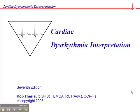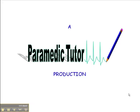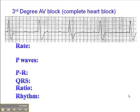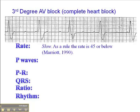We're on page 69 of the Cardiac Deserved Me Interpretation Workbook, and I'm going to talk about third-degree AV block. In a third-degree AV block, the heart rate is typically slow. As a rule, heart rate is 45 or below.